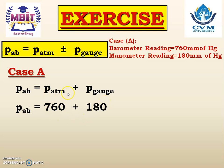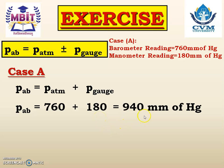Atmospheric pressure 760 plus gauge pressure 180 gives 940 millimeter of Hg as the absolute pressure for case A. However, we require to convert this answer into bar and pascal — that is newton per meter square — so this is not yet the required answer.